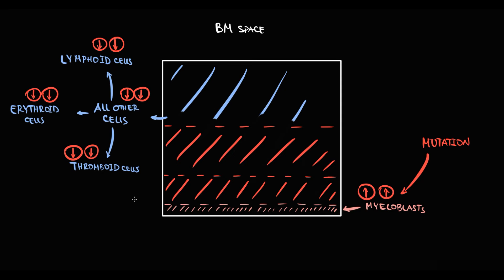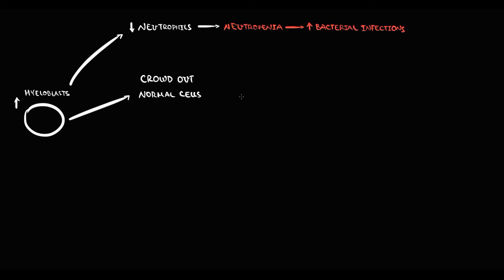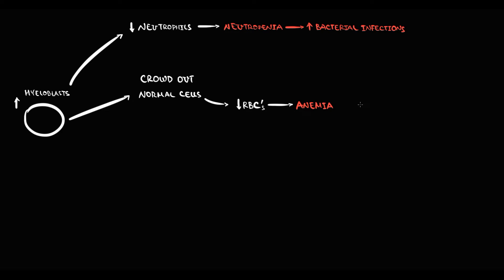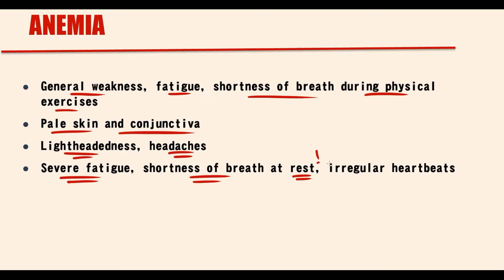Increasing amounts of myeloblasts crowd out erythroid cells, thereby decreasing the production of red blood cells. Decreased red blood cells cause decreased hemoglobin concentration — a condition we call anemia. Patients with acute leukemia will have typical anemic symptoms: weakness, fatigue, and shortness of breath during physical exercise. Patients will also have pale skin and pale conjunctiva. If anemia progresses, additional symptoms appear — lightheadedness, headaches, severe fatigue, shortness of breath even at rest, and irregular heartbeats.